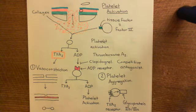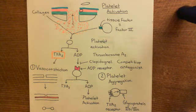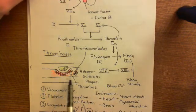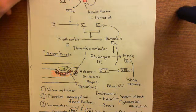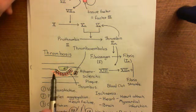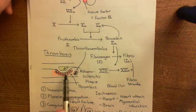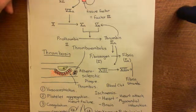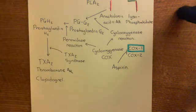Therefore your platelets aren't going to be able to become sticky, so you're not going to get platelet aggregation, and you're not going to get vasoconstriction. So clopidogrel is a powerful antithrombotic because it will stop the rise in thromboxane A2 which occurs in the formation of a thrombus, meaning you don't get vasoconstriction and you don't get platelet aggregation. You will still get platelet adhesion — the first layer of platelets bound to the endothelial cells — but you won't get platelets stacking on top to form the bulk of the thrombus. That is how clopidogrel stops the formation of thrombi.